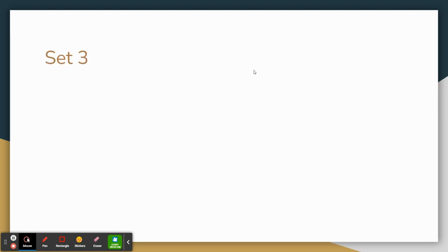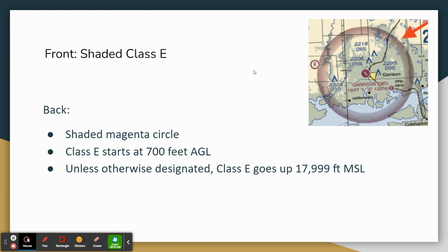You could also make a flashcard for Class Golf airspace — just know that it's uncontrolled airspace where you can fly without permission. I hope you've enjoyed this video. If you have, please give it a like, share it, and subscribe to my channel. I'm going to upload more videos about the FAA Part 107 drone exam. Thank you for watching Mr. Mig's Classroom and I'll see you next time.